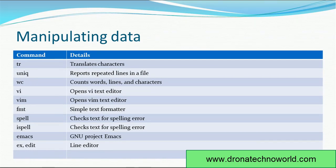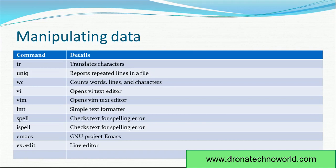The UNIQ command reports repeated lines in a file, so it is very helpful for determining duplicate lines. WC (word count) — you may have seen this command in earlier UNIX tutorials — gives the number of words present in a given file. VI is a well-known command that opens a file in the VI text editor where you can read and edit. VIM is another text editor similar to VI. FMT is a simple text formatter.